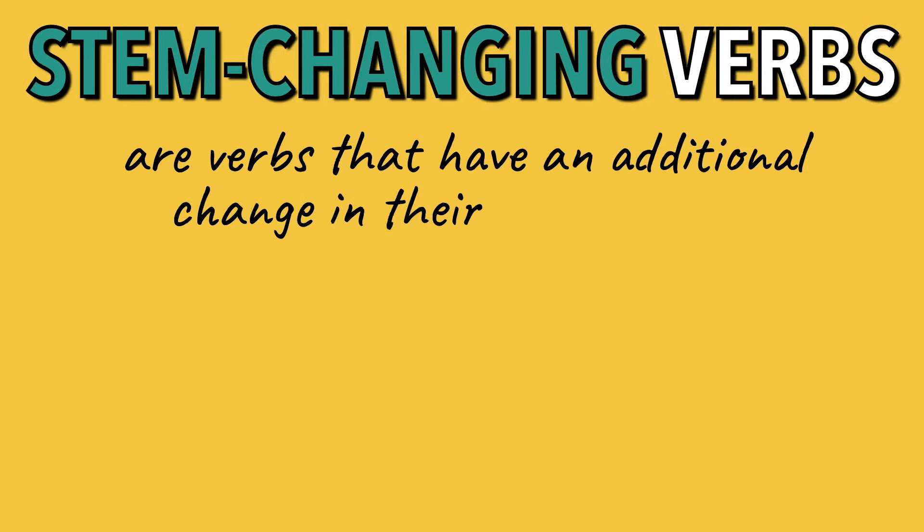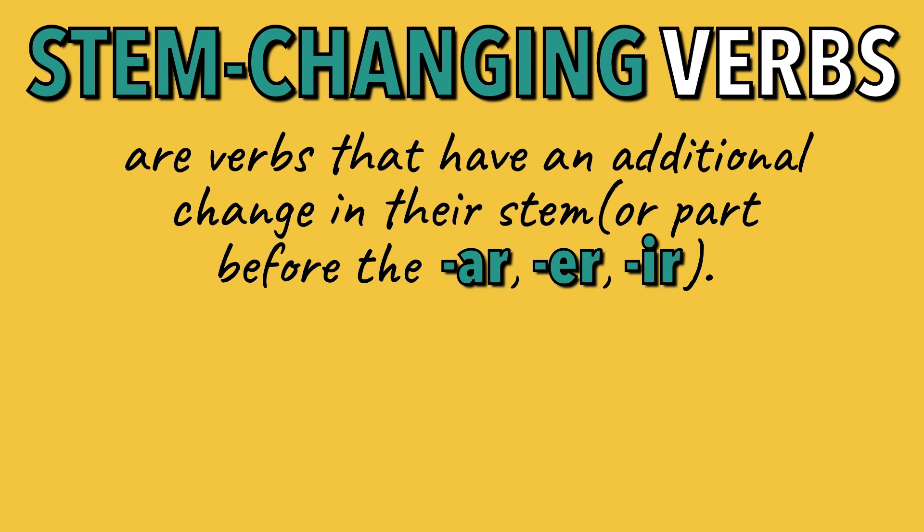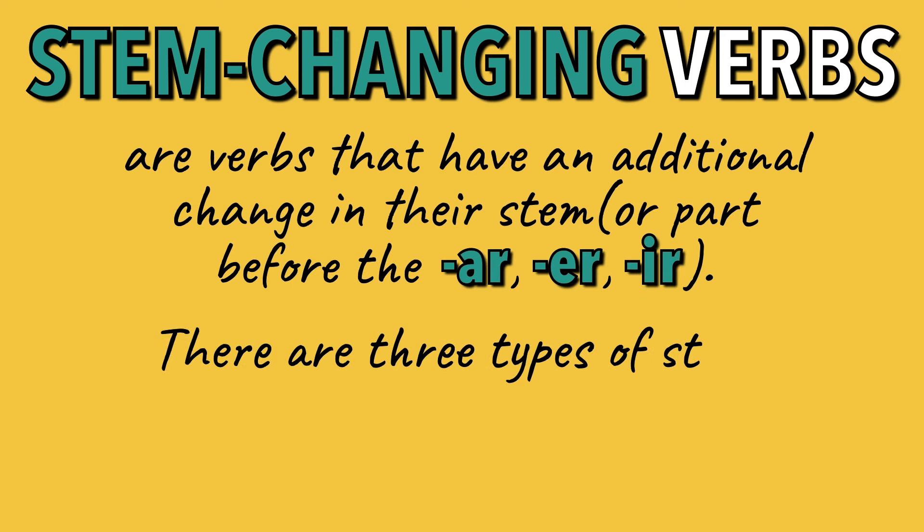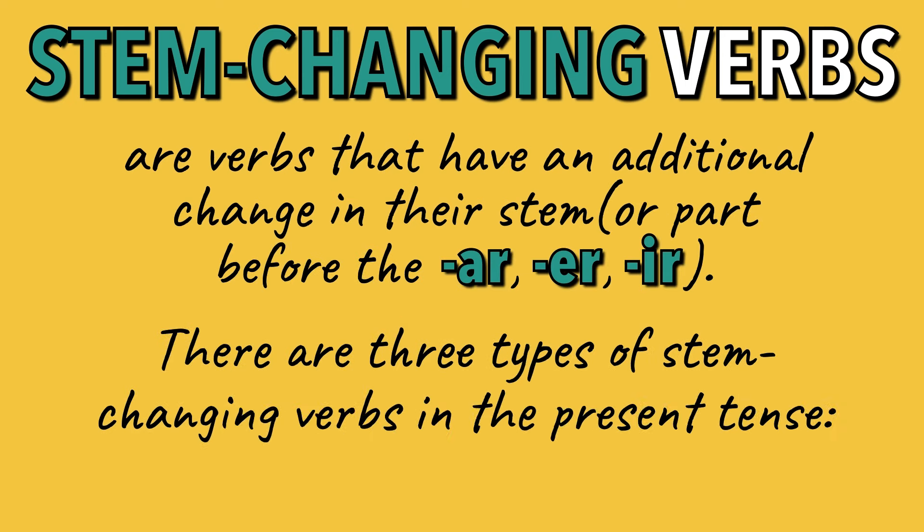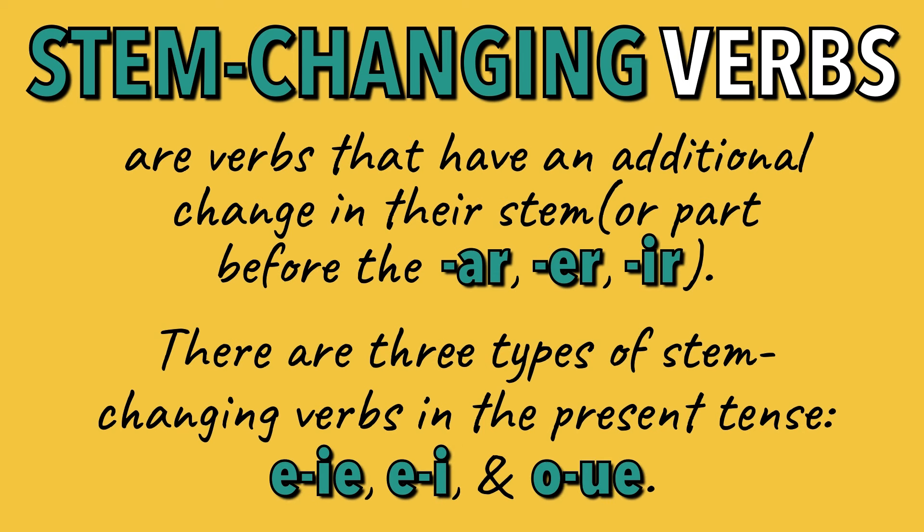Stem-changing verbs are verbs that have an additional change in their stem — the part before the AR, ER, or IR. There are three types of stem-changing verbs in the present tense: E to IE, E to I, and O to UE.